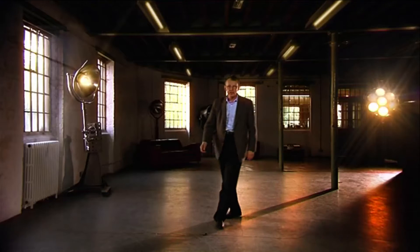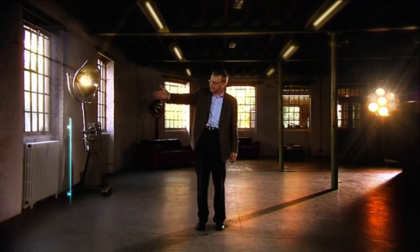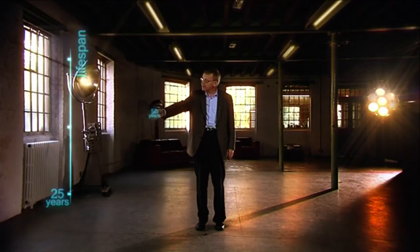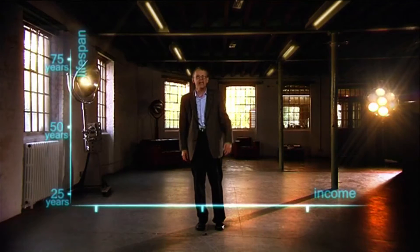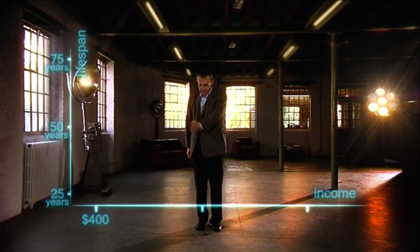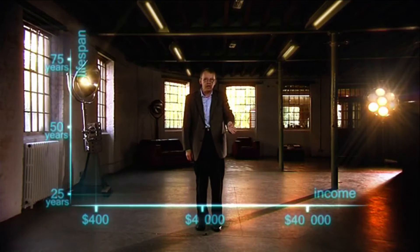So, here we go. First, an axis for health. Life expectancy. From 25 years to 75 years. And down here, an axis for wealth. Income per person. $400, $4,000, and $40,000.